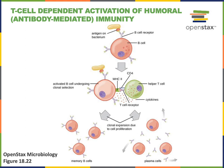This activated B cell will then divide, going through cell proliferation to make many more B lymphocytes that all produce antibodies that can bind to the same antigen. Some of these will be the long-lived memory B cells, and some will be the effector plasma cells that secrete antibodies. These secreted antibodies then function for the antibody-mediated immunity, binding to antigens on the surface of the pathogen and helping to defend against infection.